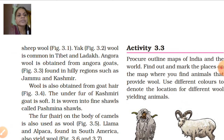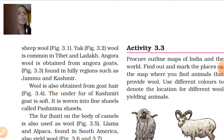These breeds are mostly found in Tibet and Ladakh. Angora wool is obtained from Angora goats, found in hilly regions such as Jammu and Kashmir.